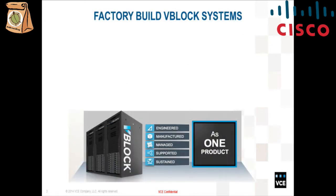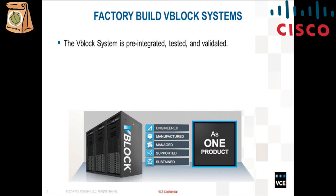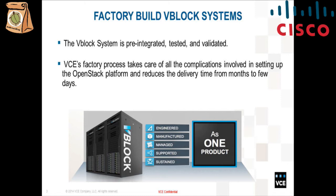Why VBlock, and why OpenStack on VBlock? The main advantage of a VBlock is that the system is pre-integrated, tested, and validated in a factory. We take all the parent products — for example, storage from EMC, servers and switches from Cisco, and virtualization from VMware — and we integrate, test, and validate them together, so customers don't have to worry about whether it's going to work. In the case of OpenStack, VCE's factory process takes care of all the complications involved in installation of the OpenStack platform, and that reduces delivery time from a couple of months to a few weeks or days.